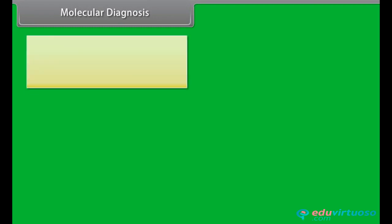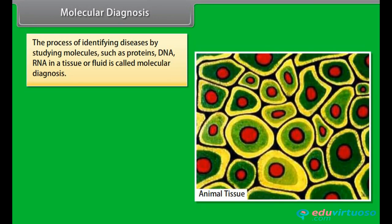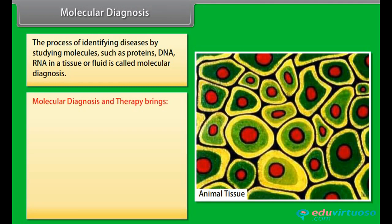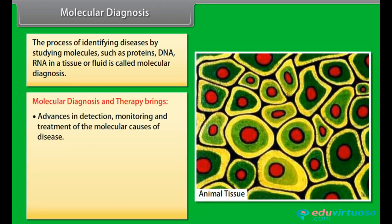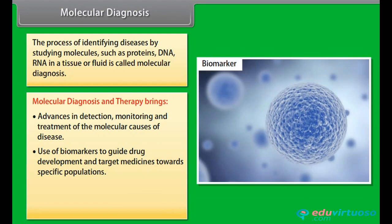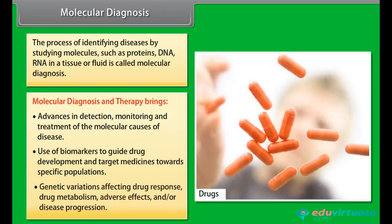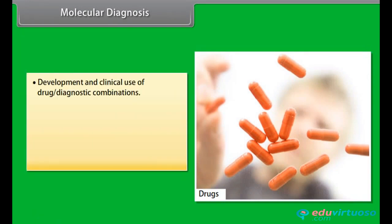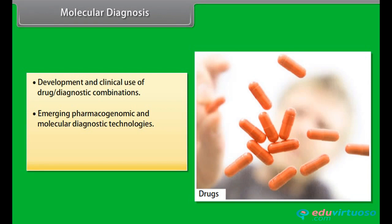Molecular diagnosis. The process of identifying diseases by studying molecules such as proteins, DNA, and RNA in a tissue or fluid is called molecular diagnosis. Molecular diagnosis and therapy brings advances in detection, monitoring, and treatment of the molecular causes of disease. Uses include: biomarkers to guide drug development and target medicines towards specific populations; genetic variations affecting drug response, drug metabolism, adverse effects, and disease progression; development and clinical use of drug-diagnostic combinations; emerging pharmacogenomic and molecular diagnostic technologies; and regulatory issues in diagnostics and personalized medicine.